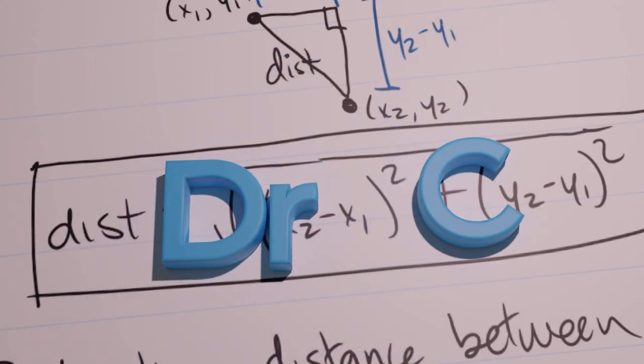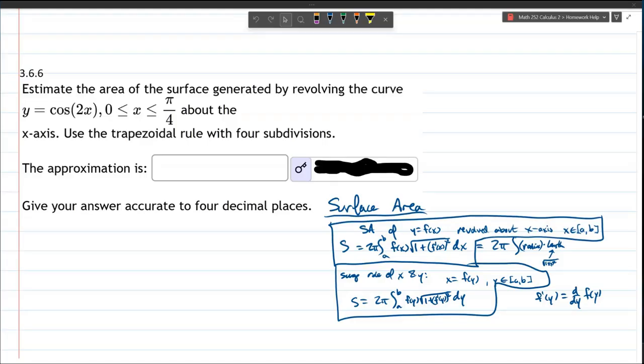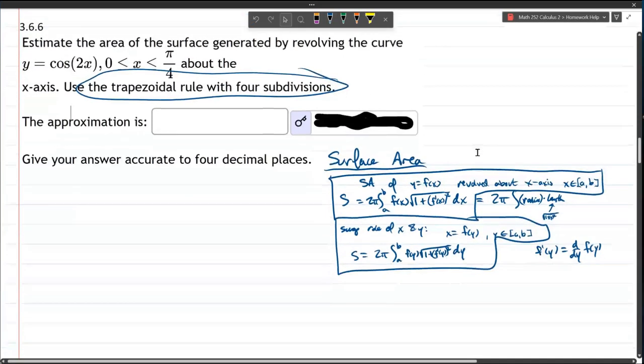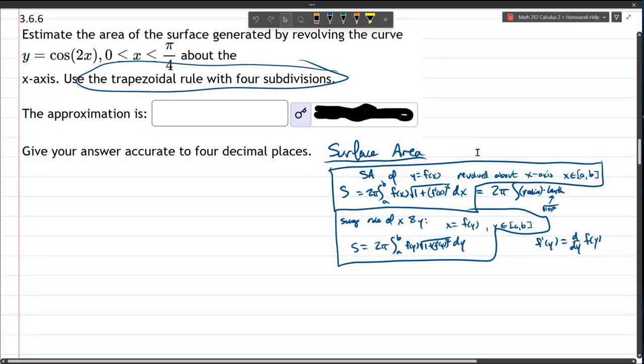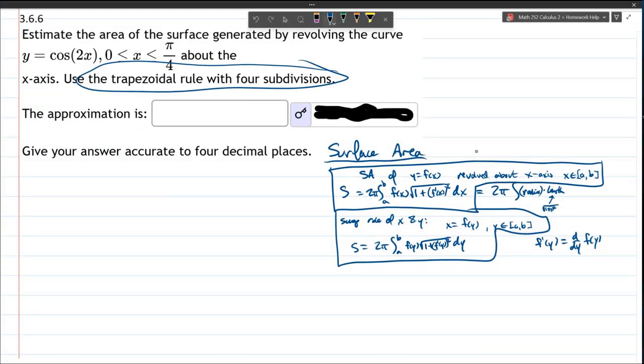We're about to find the surface area revolving a curve about the x-axis, and instead of integrating, we're going to use the trapezoid rule with four subdivisions. So we're not actually going to integrate what we get, but we still need the surface area integral formula. I have both of them written down here, and we're going to use the first one because we're revolving about the x-axis, not the y-axis. So let's go ahead and rewrite that.